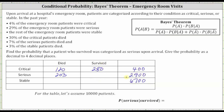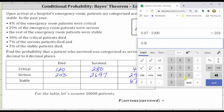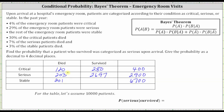To find the number of serious patients that survived, we take 2,900 and subtract 203, which equals 2,697. 3% of the stable patients died. To find 3% of 6,700, we convert 3% to a decimal and multiply: 0.03 times 6,700 equals 201. So 201 stable patients died. To find the number that survived, we take 6,700 and subtract 201, which equals 6,499.